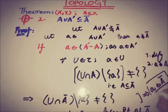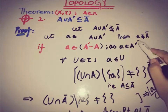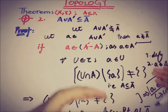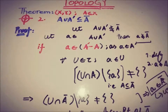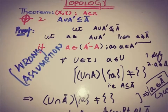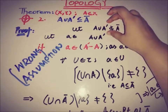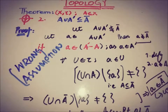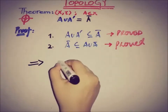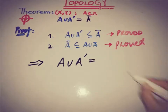This is again a contradiction, because by our assumption, if x is a member of A union A-prime, then x should NOT be a member of A-bar. But by using this definition we have reached a contradiction — that x IS a member of A-bar. This means that A union A-prime is a subset of A-bar, because from both cases we reached a contradiction. So we have proved that A union A-prime is a subset of A-bar. This is the second part we have proved. Combining the first and the second part of this theorem, this implies that A union A-prime equals A-closure. So this is our target, and we have proved it by dividing this theorem into two parts.